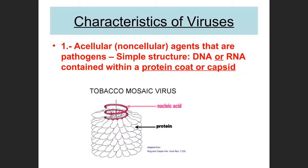Every virus has at minimum a nucleic acid — either DNA or RNA — and a protein coat, also called a capsid. Those two components are present in 100% of viruses. Tobacco mosaic virus, for example, is a fairly large but very simple virus: all it has is nucleic acid and a protein coat. The protein coat is built from smaller subunits assembled together around the nucleic acid to protect it.